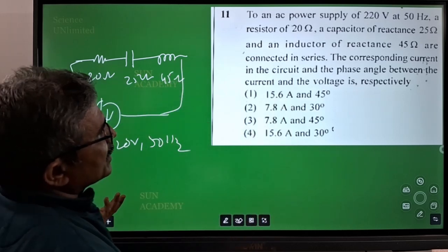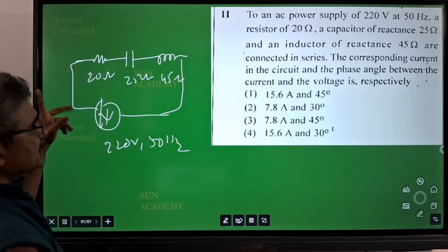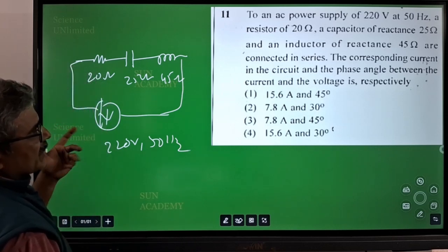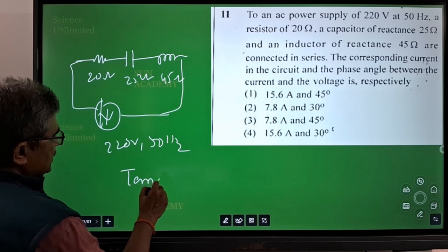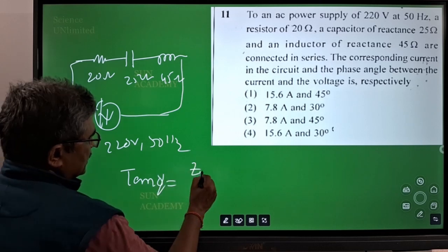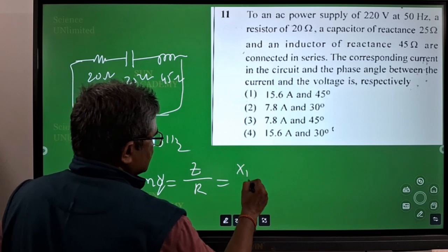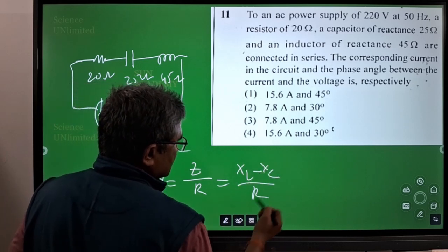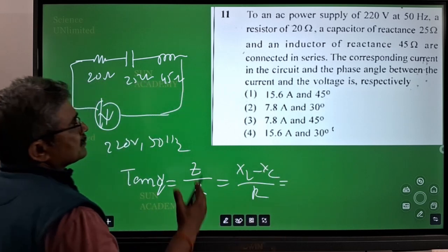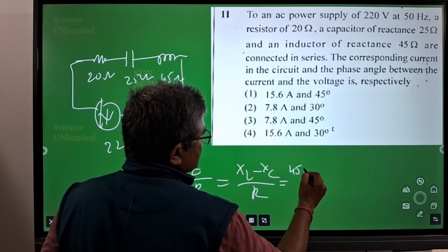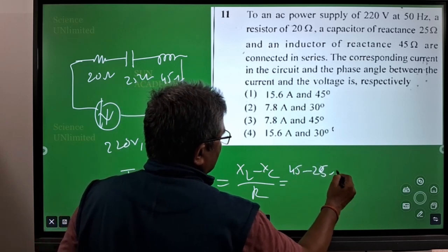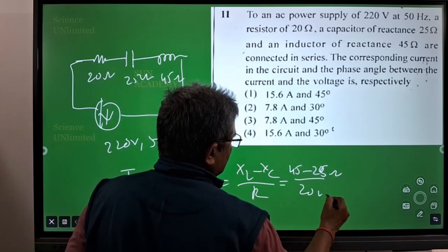We need to find out the phase angle and current in the circuit. I will consider phase angle first. Phase angle tan φ is equal to Z by R, where Z can be written as XL minus XC by R, which is equal to XL that is 45 ohms minus 25 ohms by 20 ohms.